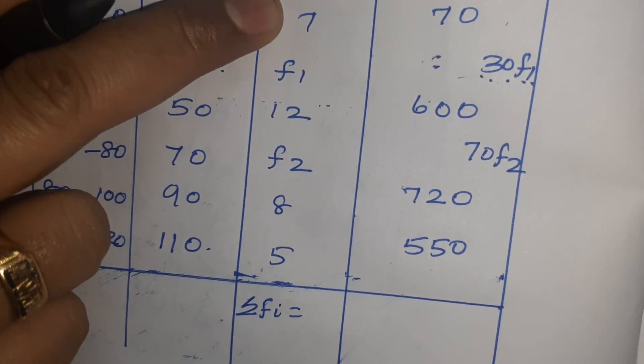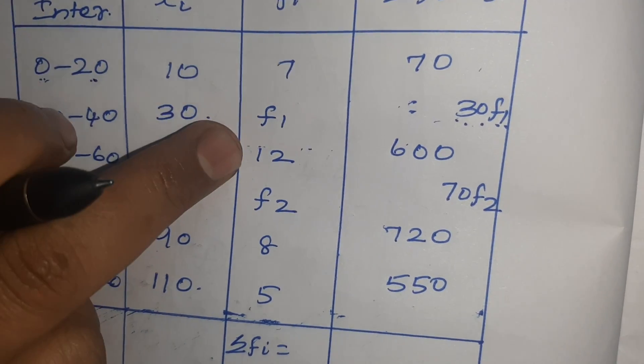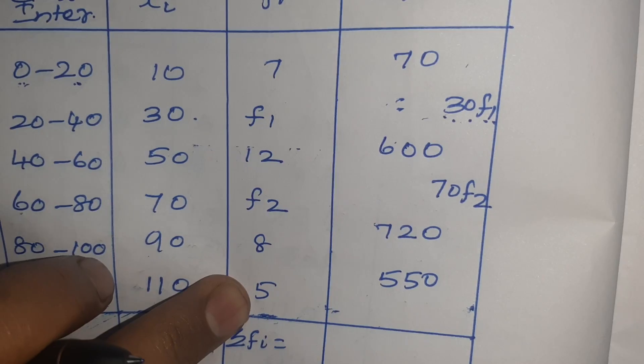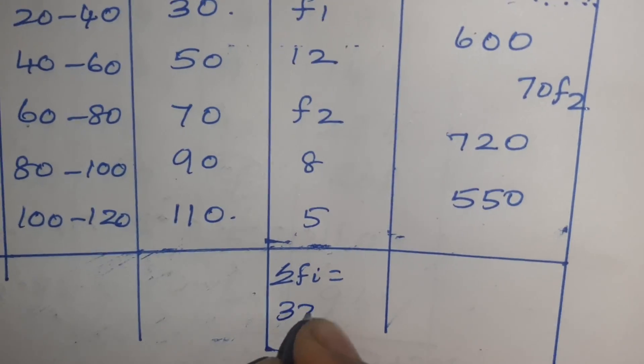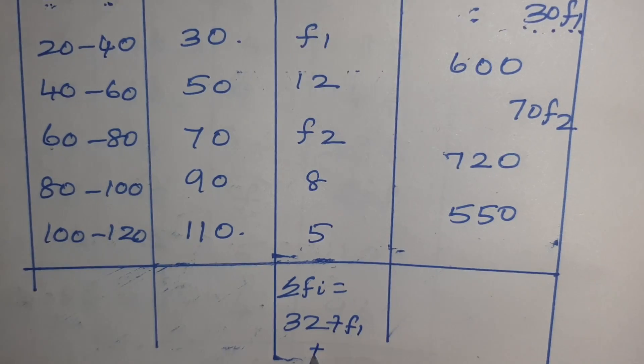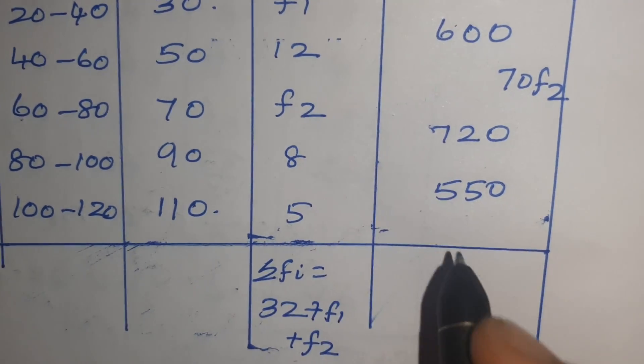First add the numbers alone: 7 plus 12 equals 19, 19 plus 8 equals 27, 27 plus 5 equals 32. Here F1 plus F2, so 32 plus F1 plus F2.